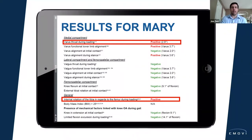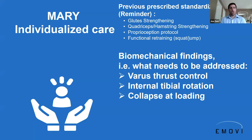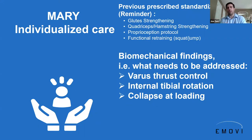This makes sense with the tibiofemoral medial compartment pain and patellofemoral pain she has. So we went from a one-size-fits-all standard of care — glute strengthening, quadriceps strengthening, hamstring strengthening — to providing exercises that will reduce her varus thrust and prevent that internal tibial rotation or collapse during the loading response phase.